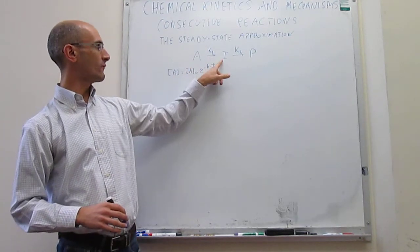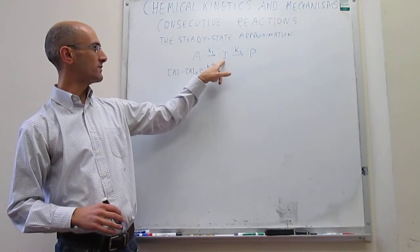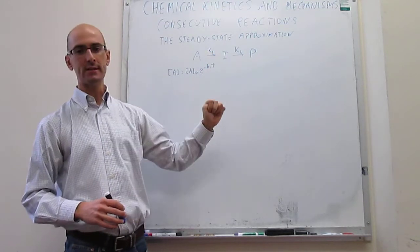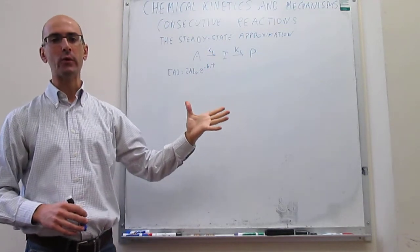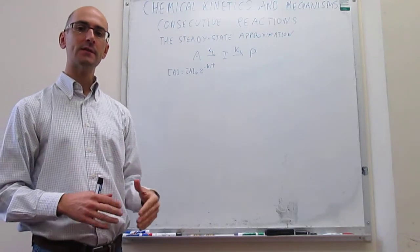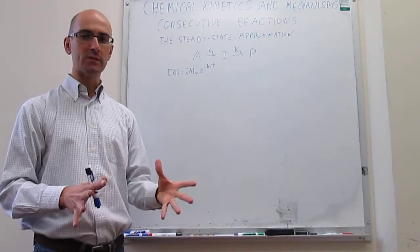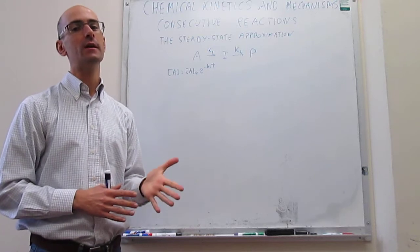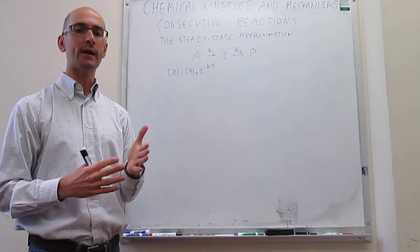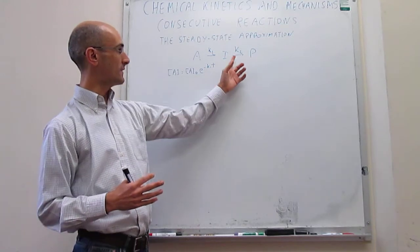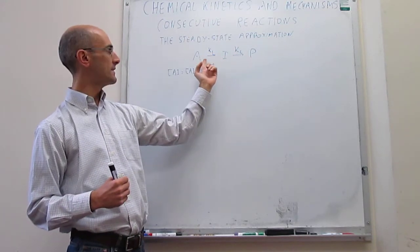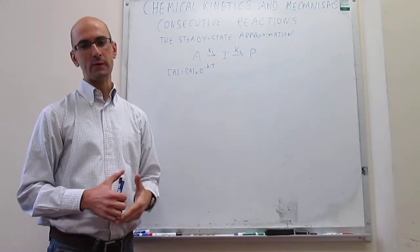In a consecutive reaction, a reagent gives an intermediate which then makes a product, and the rate constants that control the reactivities are K1 and K2. We have solved the kinetics for this process using no approximations, and in the prior video we examined what happens when K2 is much greater than K1, meaning that the first step is slow with respect to the second.